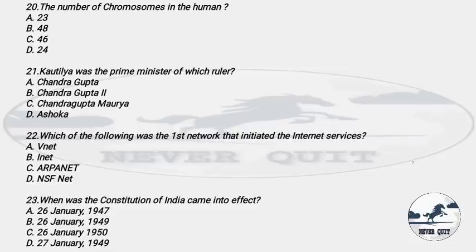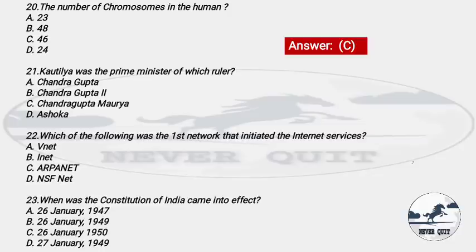Question 20: The number of chromosomes in the human body — Options: A) 23, B) 48, C) 46, D) 24. The right answer is option C — 46 chromosomes are present in humans. Chromosomes control your genetic information and pass it from one generation to the next.